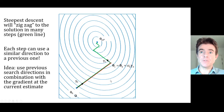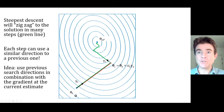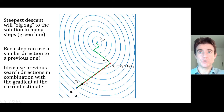With steepest descent, we've previously seen that you search in the direction of the gradient, then you minimize the cost function in that search direction. You know you've minimized it by the fact that when you arrive at a new estimate, the gradient there should be orthogonal to the original search direction. But what happens is, like shown here, you get a kind of zigzagging across multiple steps towards the solution.